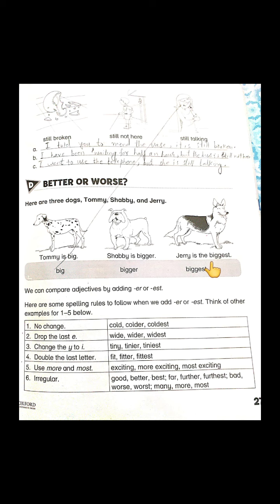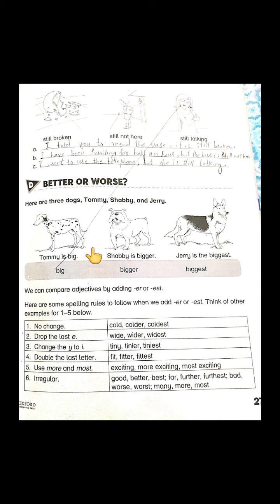Comparative, as it shows from its name, comes from comparison. Comparative adjectives are used to compare one noun to another. For example, Tommy is big and Shabby is bigger — 'bigger' is the comparative adjective because it is comparing two nouns, one noun to another.